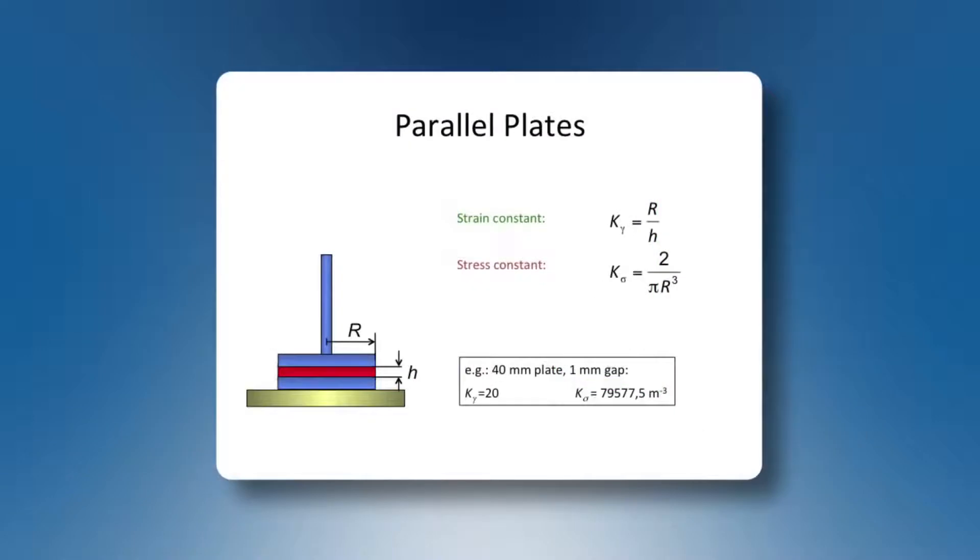For a parallel plate geometry, the strain constant is defined as r over h. r is the radius of the plate, and h is the gap, the distance between the upper and lower plate. The stress constant is defined as 2 over pi times r to the power of 3.